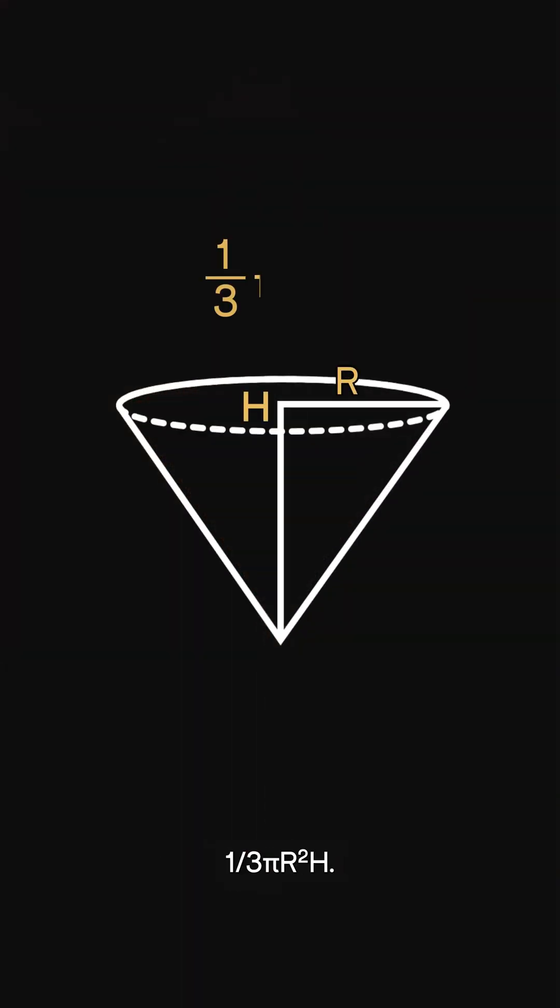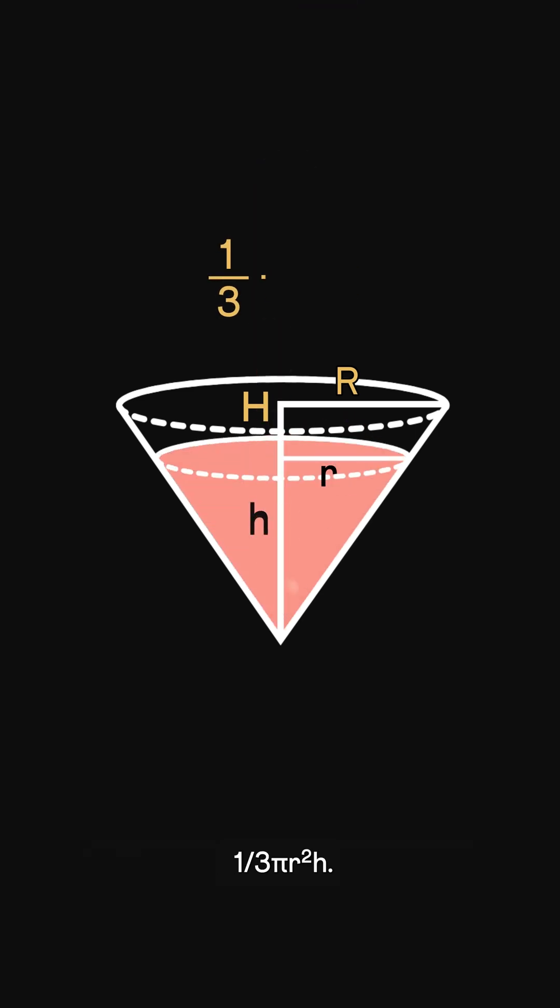The volume of a cone is 1/3 πr²h. So the volume of the drink is 1/3 πr²h, with the glass filled up to 80% height. h is 0.8 of the total height.